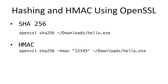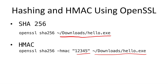You can calculate hash values as well as HMAC using OpenSSL, which has support for both. Pause here and try calculating the hash value and HMAC on some file using OpenSSL. Replace the path to the file in the commands shown, and you can also change the secret key for HMAC.